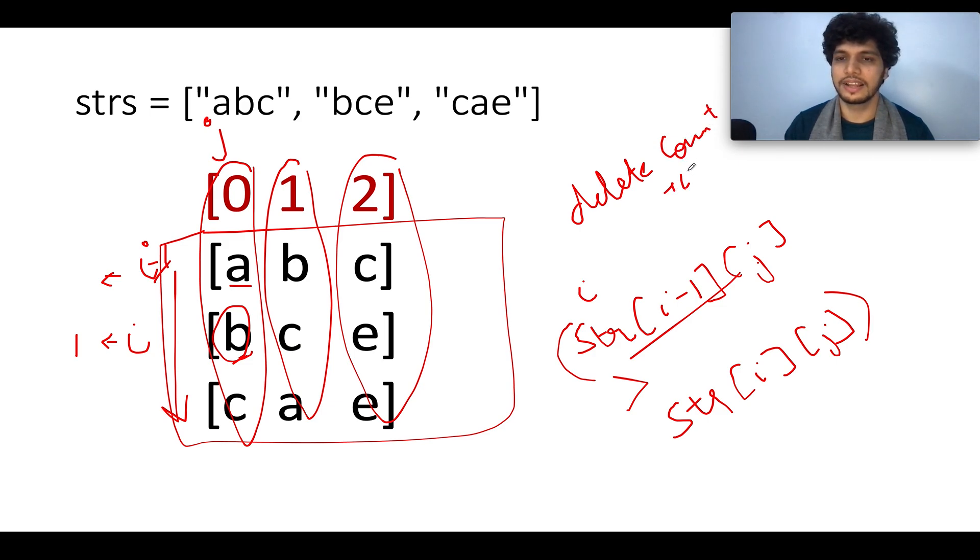So whether this condition is met or not over here, also remember guys, we are starting i from one going up till the last. Is this condition met over here? No, this is not met, this is a happy case. Let's proceed ahead. Now i will be incremented to this place. i minus one would be one. C is greater than B, again it's a happy case. We have iterated over the entire zeroth column, let's move on to the next one.